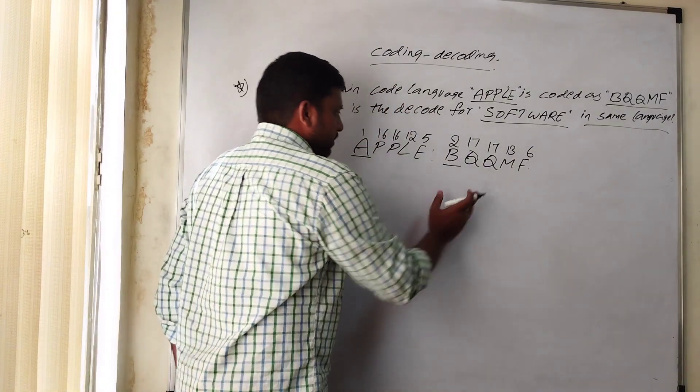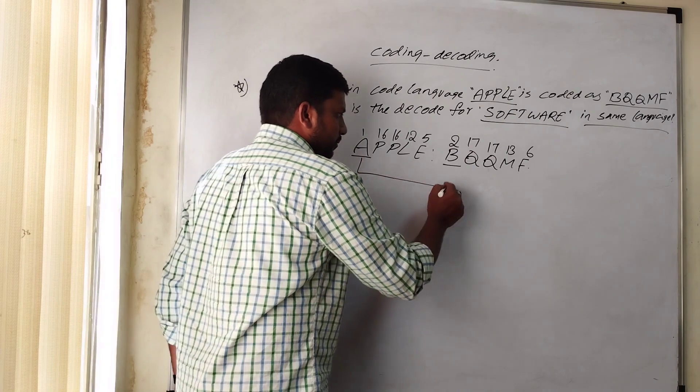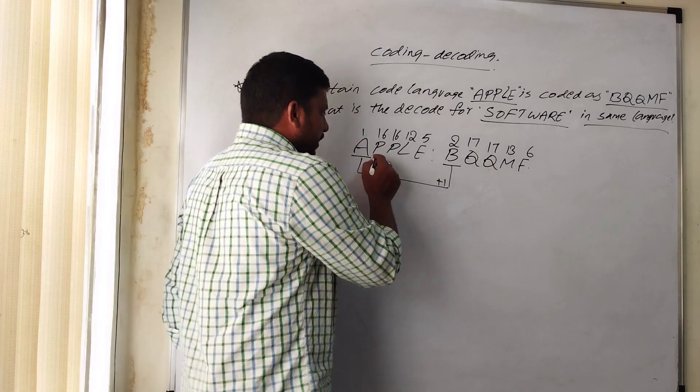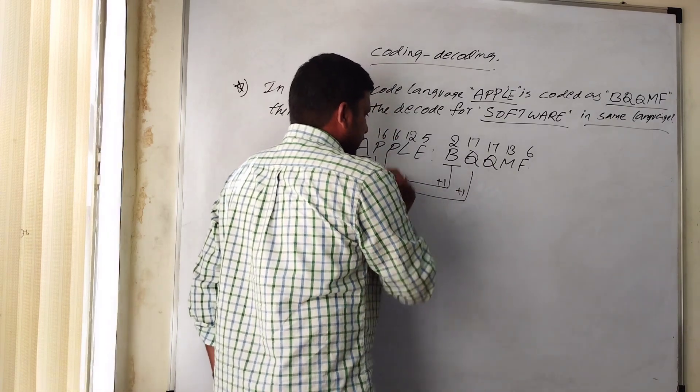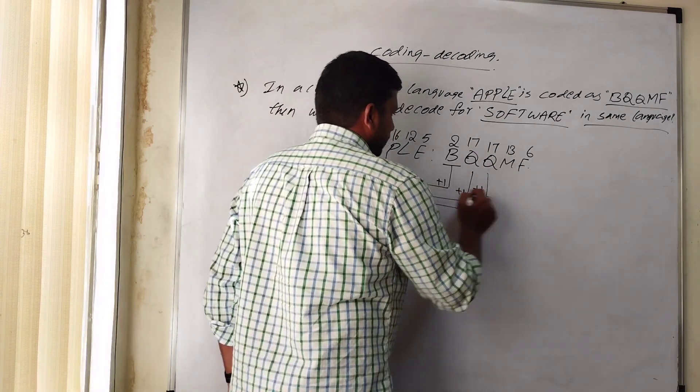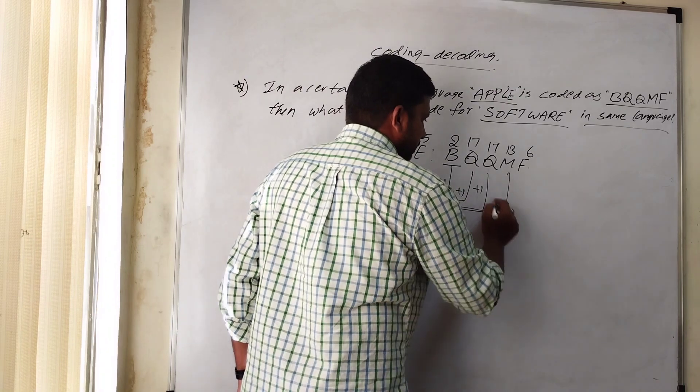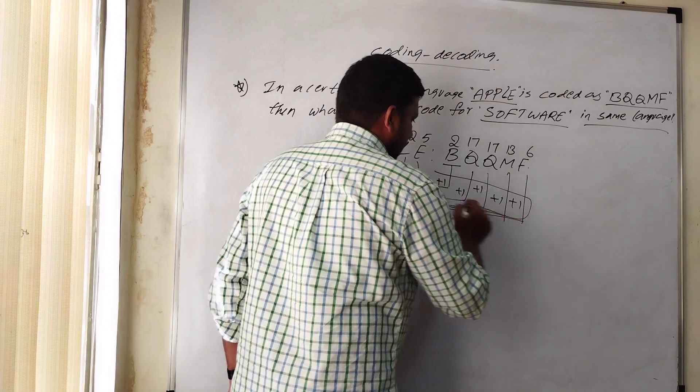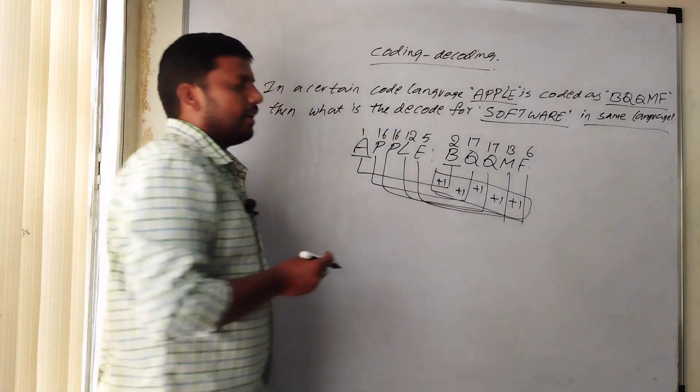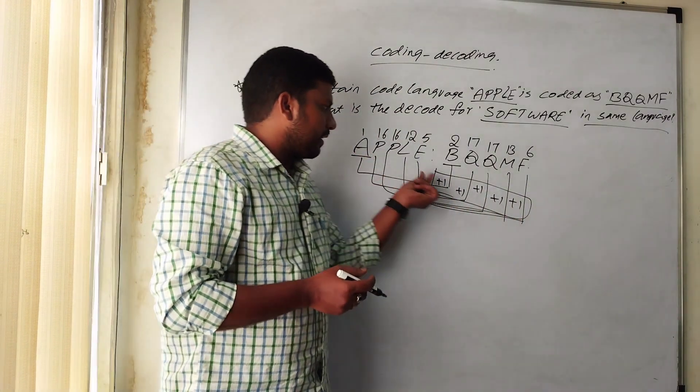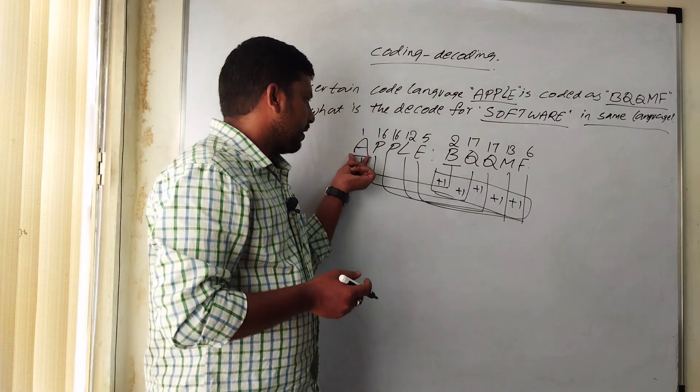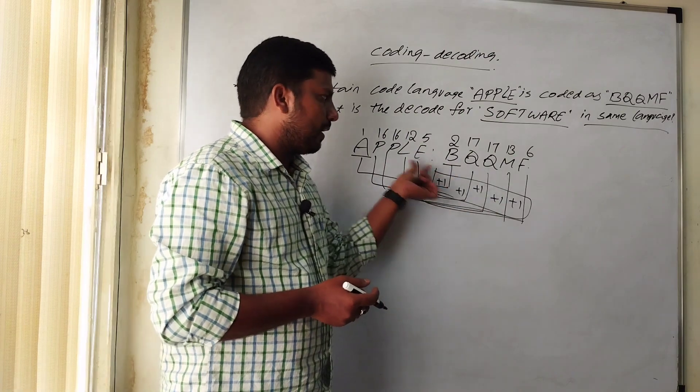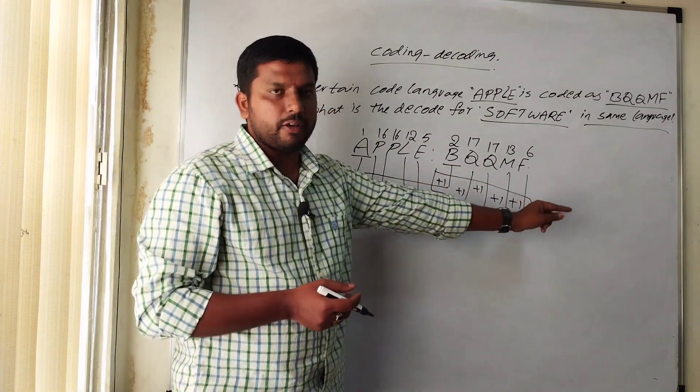A is in first place and P sixteenth and L twelfth and E is in fifth place. B is in second place and Q 17th, M 13th and F sixth place. So here, each letter's position plus one. 16 plus one, 12 plus one and five plus one. First one letter is plus one place, P plus one Q, P plus one Q, L plus one M, E plus one F.